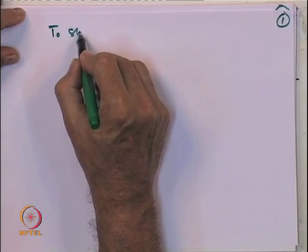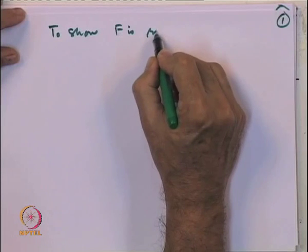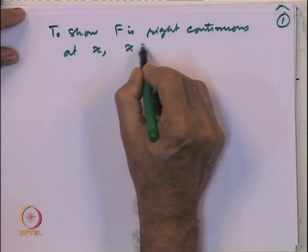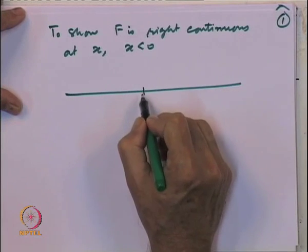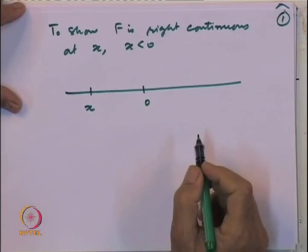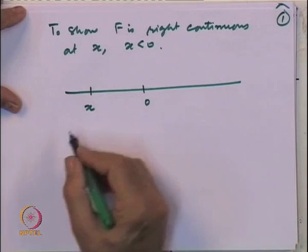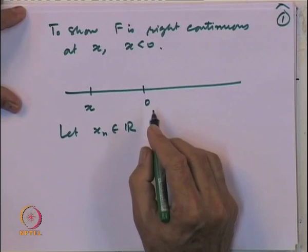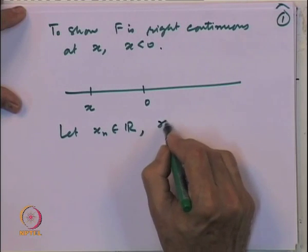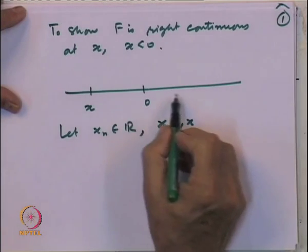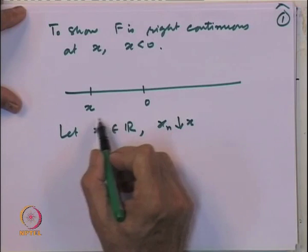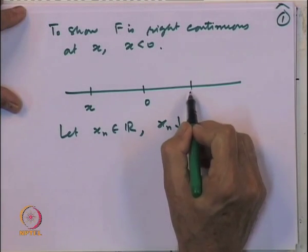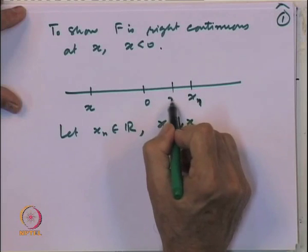We want to show f is right continuous at a point x where x is less than 0. To show right continuity at x, let us take a sequence x_n in R such that x_n decreases to x, meaning all the x_n are on the right side of x and converging to x.